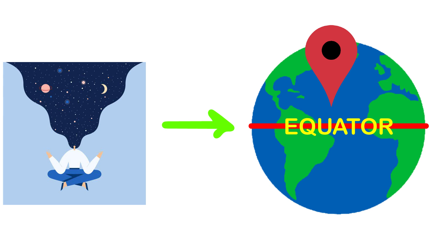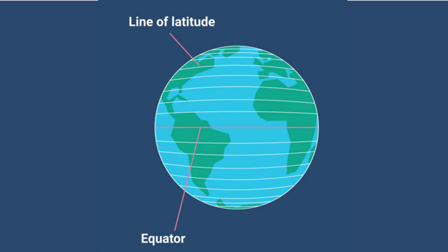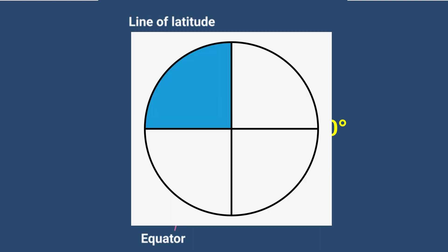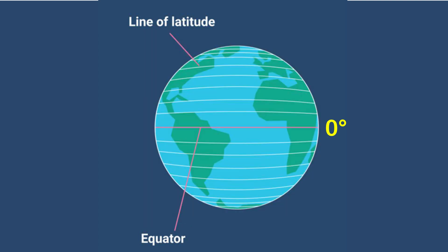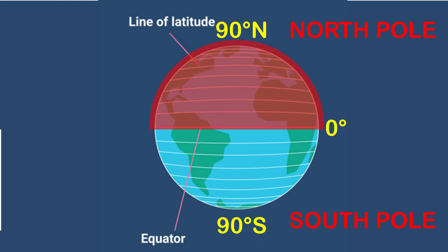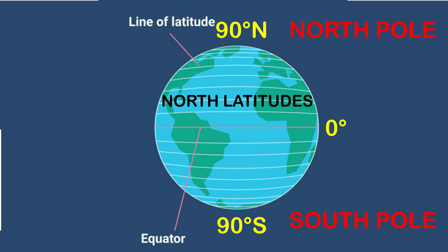All parallel circles from the equator up to the poles are called parallels of latitudes. Latitudes are measured in degrees. The equator represents the zero degree latitude. Since the distance from the equator to either of the poles is one-fourth of a circle around the earth, it measures one-fourth of 360 degrees, that is 90 degrees. Thus, 90 degrees north latitude marks the north pole and 90 degrees south latitude marks the south pole. All parallels north of the equator are called north latitudes; similarly all parallels south of the equator are called south latitudes.